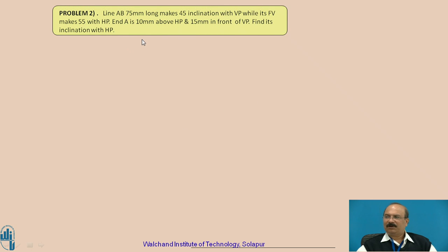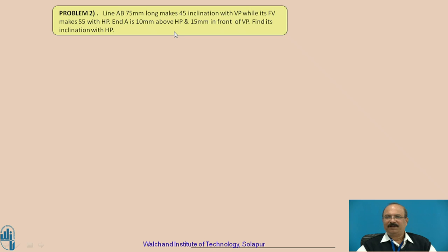The given problem: Line AB is 75 millimeters long with 45 degree inclination with VP, and its front view makes 55 degrees with HP. Point A is 10 millimeters above the HP and 15 millimeters in front of the VP. Find its inclination with HP.